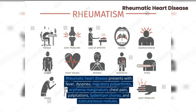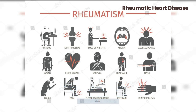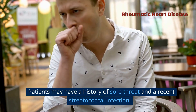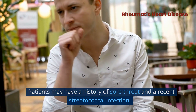Rheumatic heart disease presents with fever, dyspnea, migratory polyarthritis, erythema marginatum, chest pain, palpitations, Sydenham's chorea, and subcutaneous nodules. Patients may have a history of sore throat and a recent streptococcal infection.